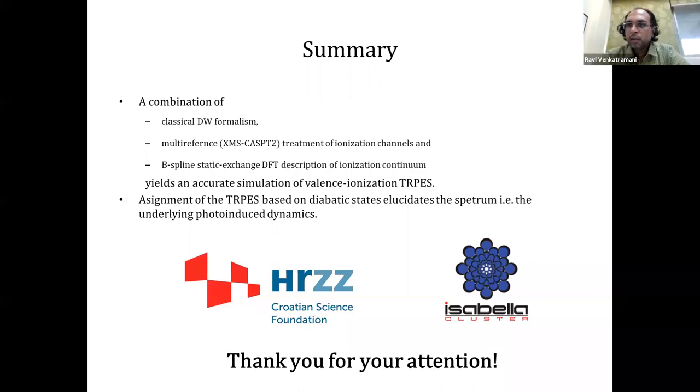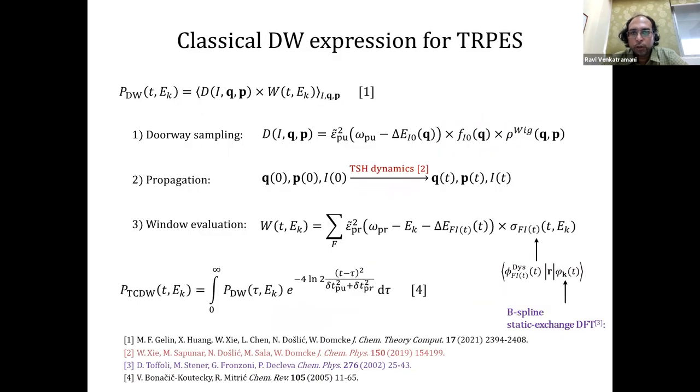So, thank you, Tomislav. So, we have time for a few questions. So far, I do not see any raised hands. So, Tomislav, I had a couple of questions, actually, with regards to your doorway window formalism. So, how do you describe your pulse shapes here, the epsilon squares that you have? Are they delta functions? Are they gaussians?